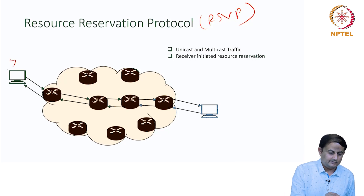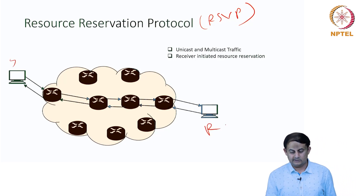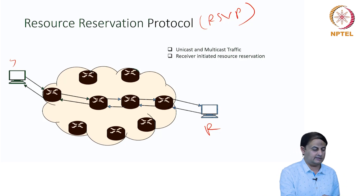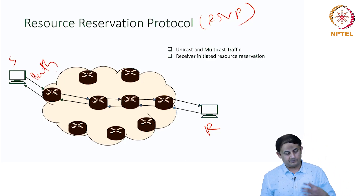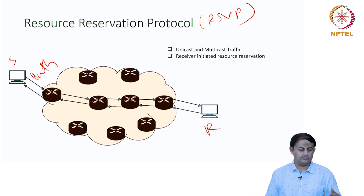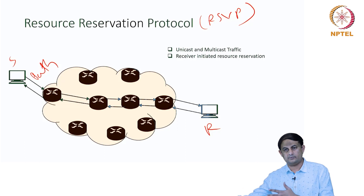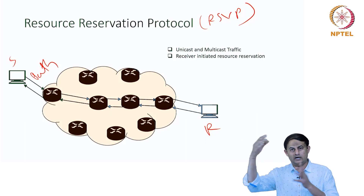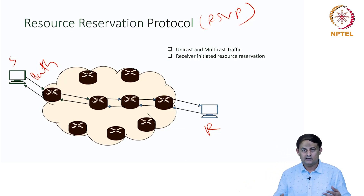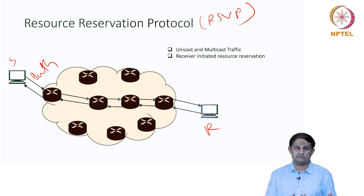In this diagram, S is the source or sender and R is the receiver, with a bunch of routers inside the network. The reservation process starts with the sender transmitting a packet called the path message, whose job is to find out what path should be taken — for example, should it go through routers R1, R2, R3, R4, and then to receiver R2. Once the path is identified, you can reserve the resources.